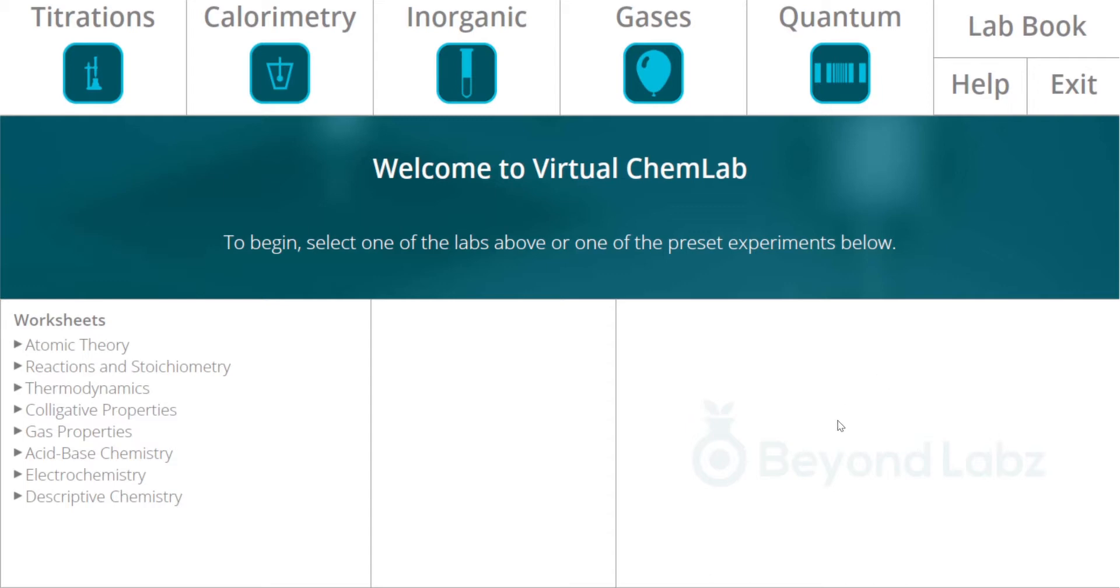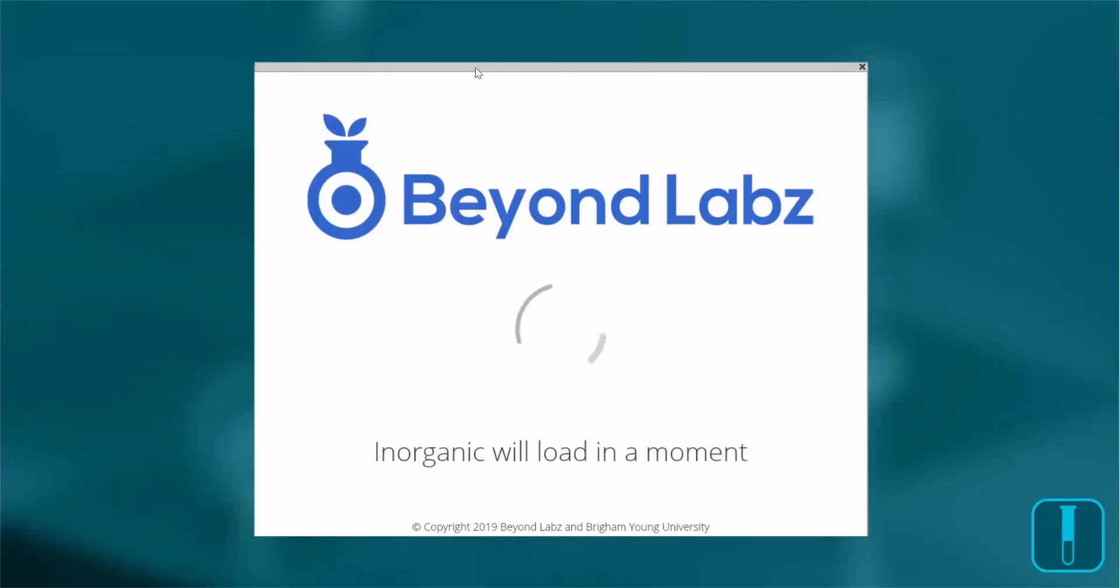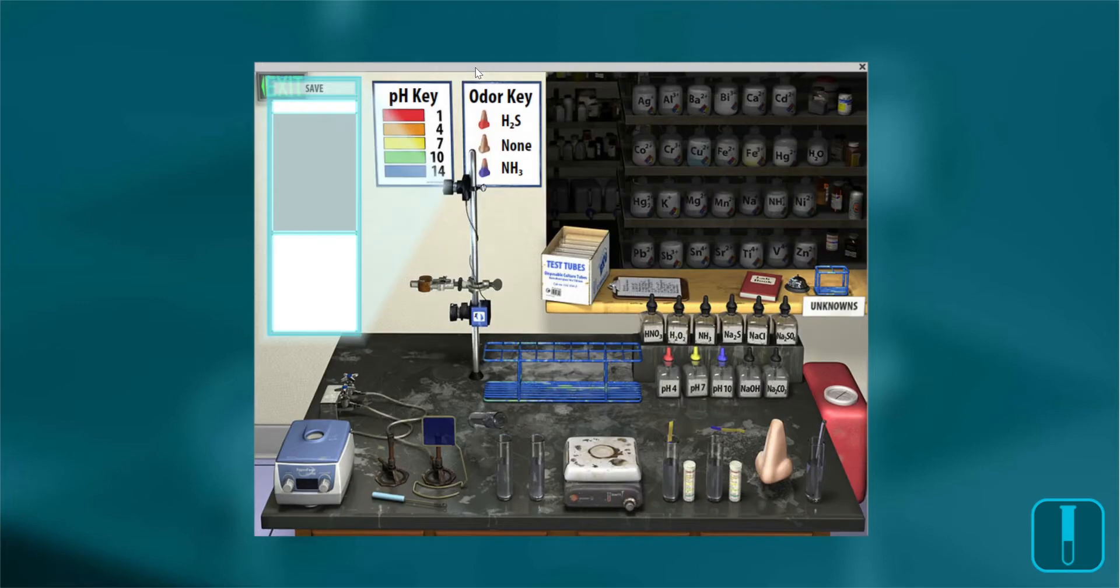In this video I'll walk you through how to perform precipitation reactions in the inorganic laboratory for qualitative analysis experiments. I'll enter through the icon at the top, though you could also enter through a worksheet preset.